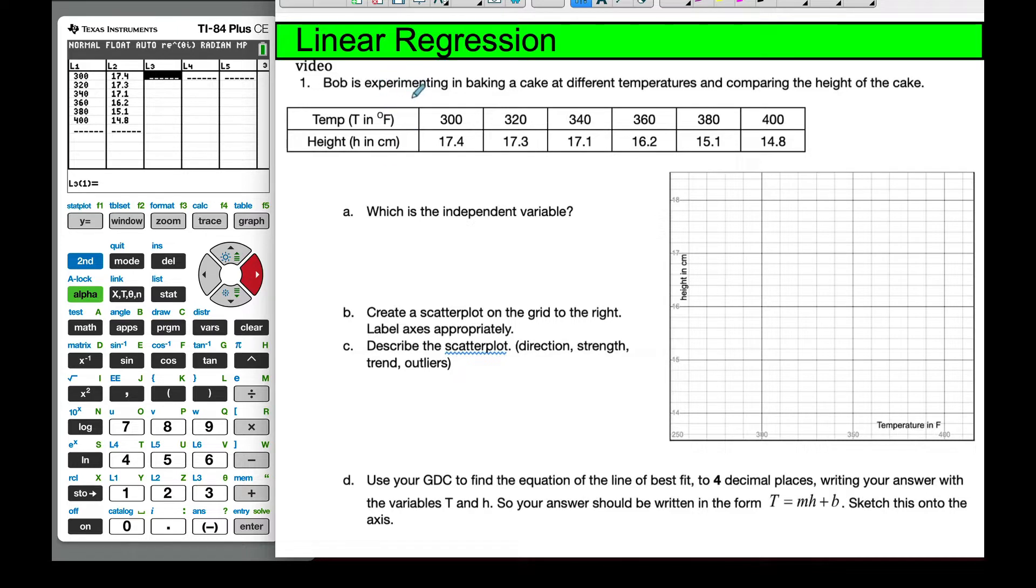And so in this example, Bob is experimenting and baking a cake at different temperatures and comparing the height of the cake. And so we have temperature T in degrees Fahrenheit, about 300 to 400, and then height in centimeters as shown.